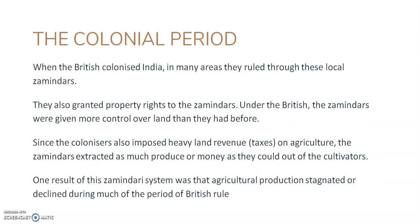When the British colonized India and started subjugating the people, in many areas they started ruling through these local zamindars. The zamindars who were very prominent in the pre-colonial period retained their prominence, and it grew in many cases after the British conquest. The zamindars during the colonial period became very important mediators between the farmers and the British East India Company. The British even granted the zamindars property rights, giving them more and more control over the land than they had before.